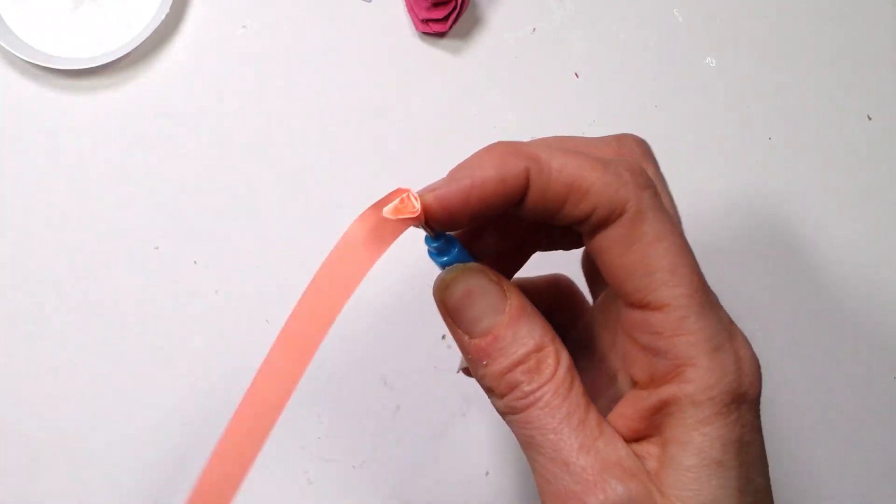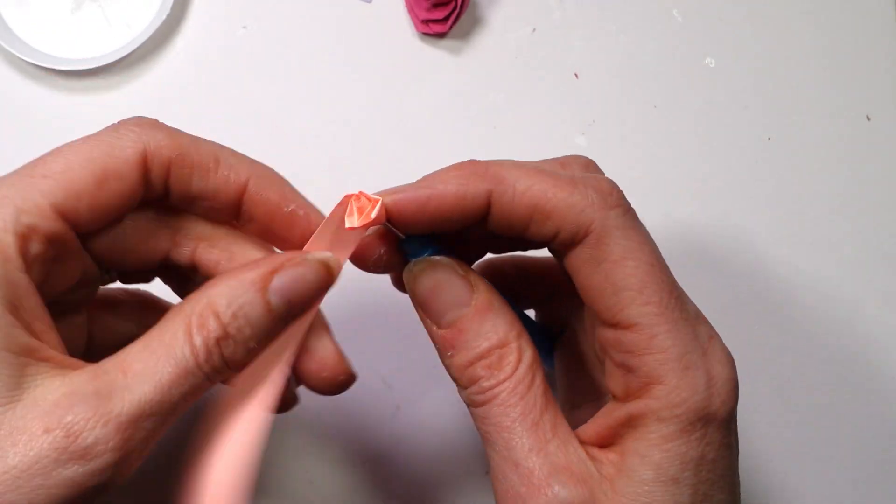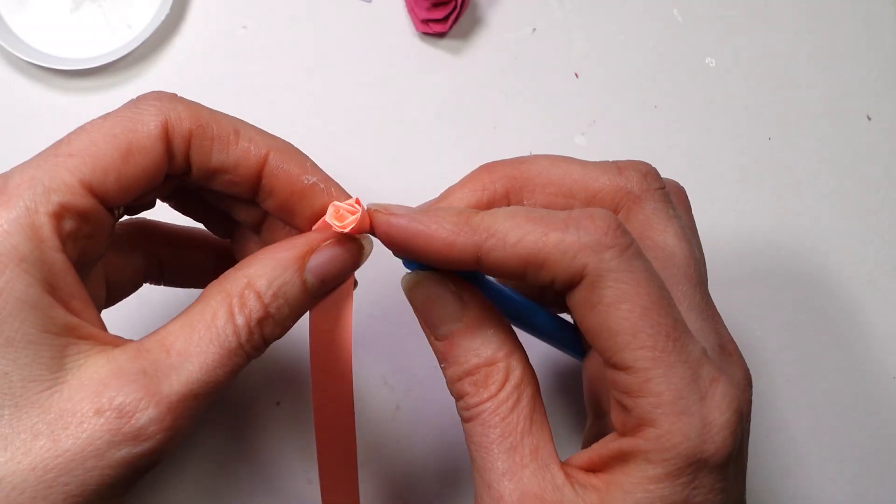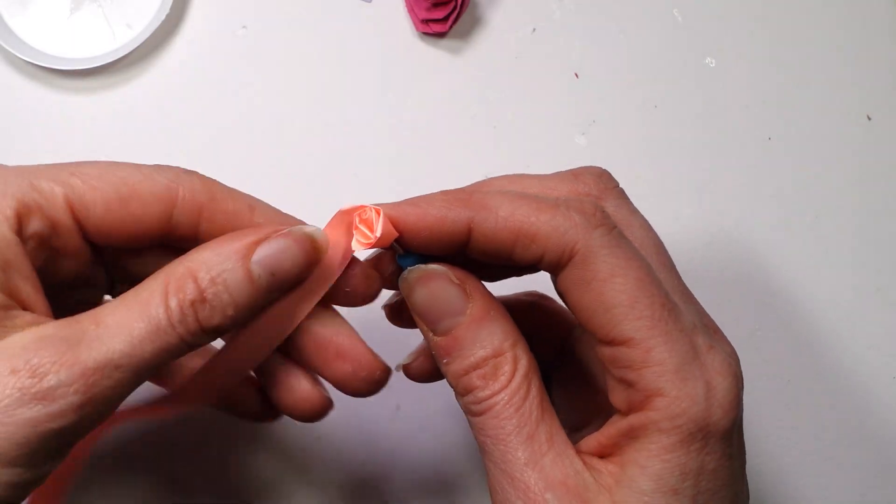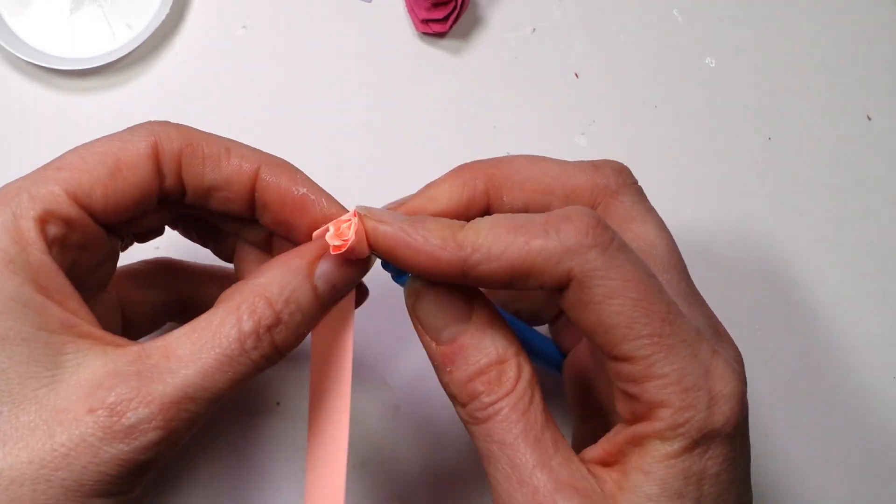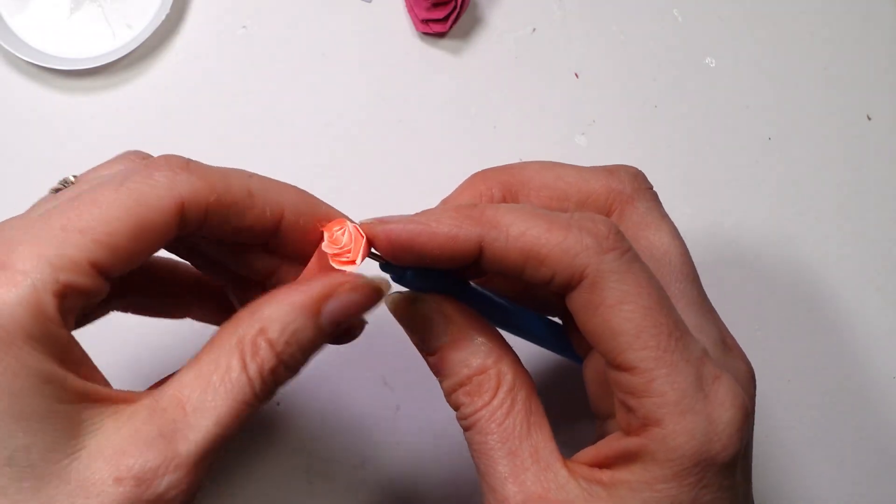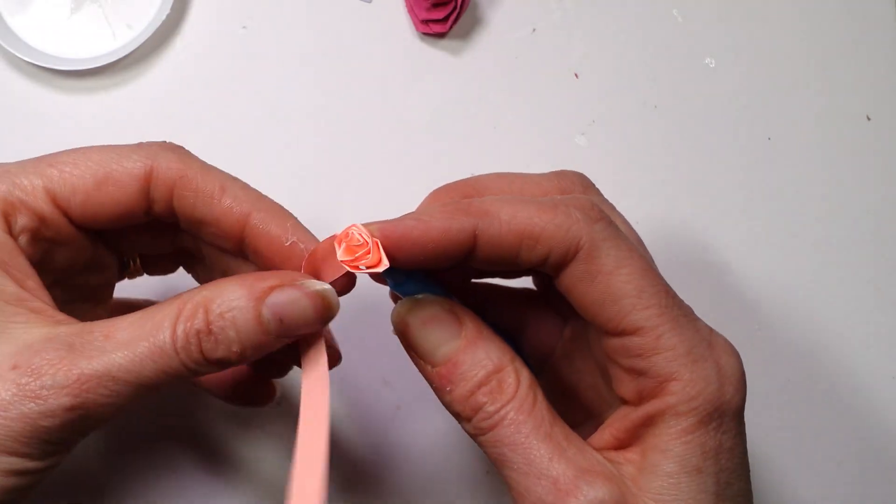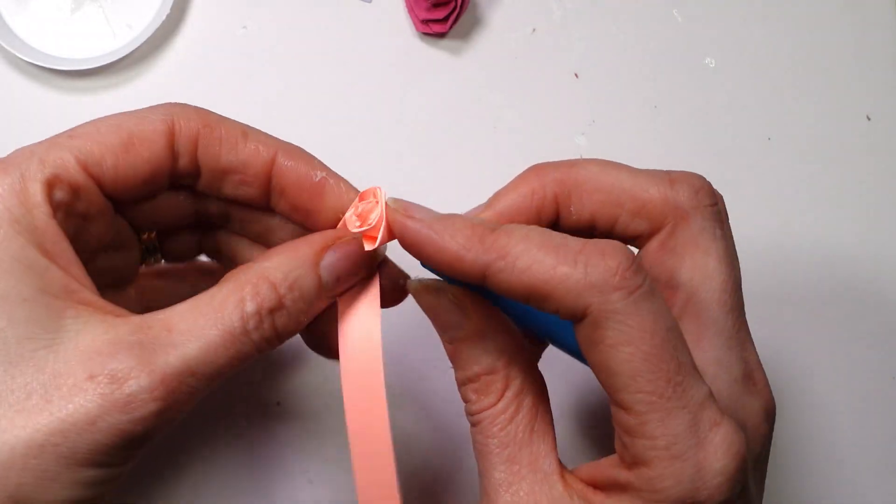You just keep repeating this, moving it further out each time and rolling until you've got the rose however thick you want to have it. Roll, and roll, and roll. I might do one more. And roll.